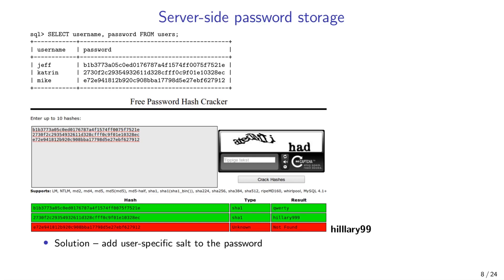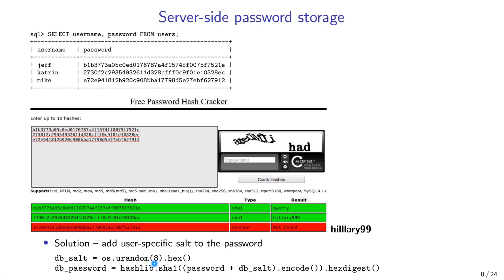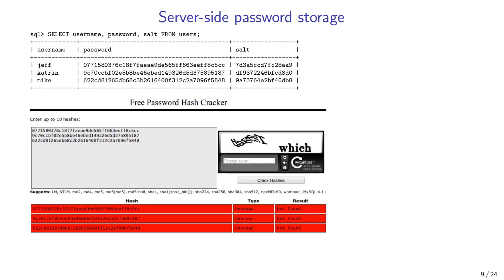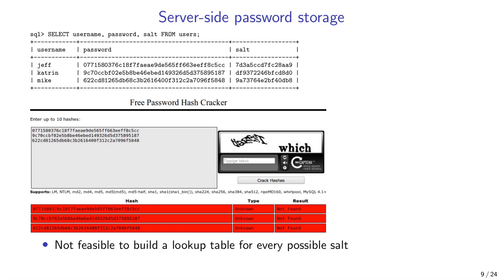The standard solution against pre-computed lookup tables is to add a user-specific salt to the password. We generate a random 8-byte value as a salt and hash it together with the password. To authenticate the user, we need the salt which was used to hash the password, so we store the salt value in the database along with the password hash. If we now paste the hashes into these lookup services, they are unable to provide any result, because the hash is no longer of a dictionary word alone but of a dictionary word plus random 8-byte gibberish. It is simply not feasible to build a lookup table for every possible salt value.